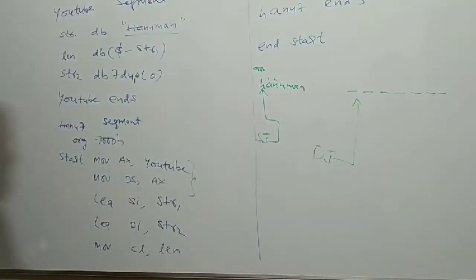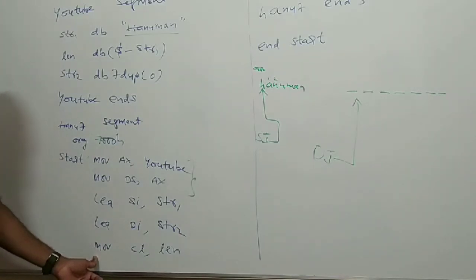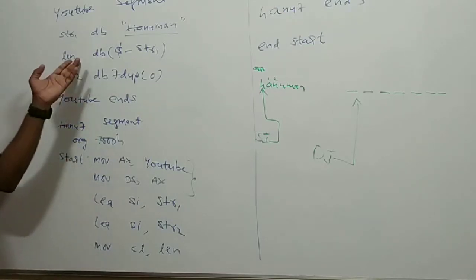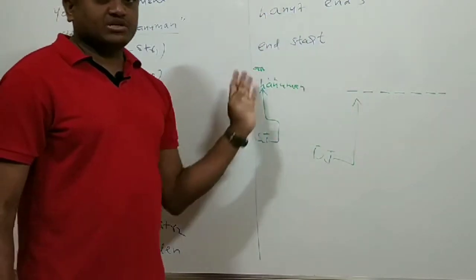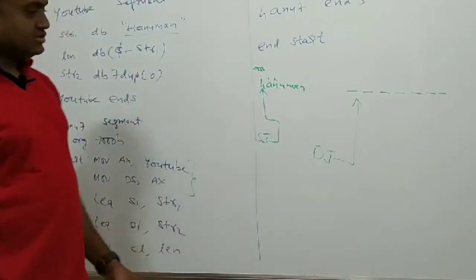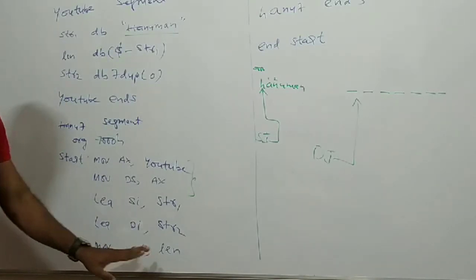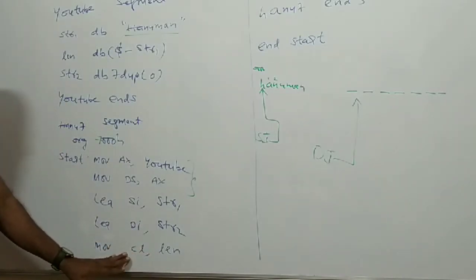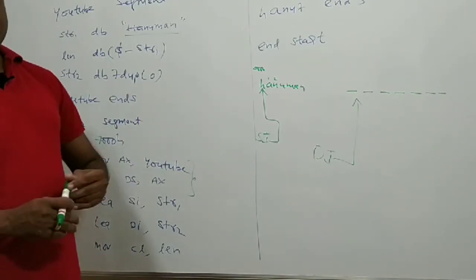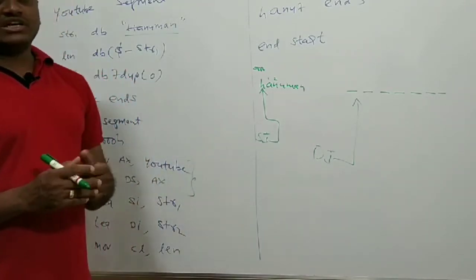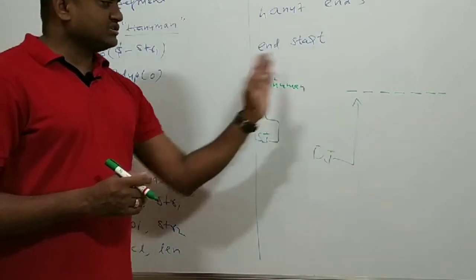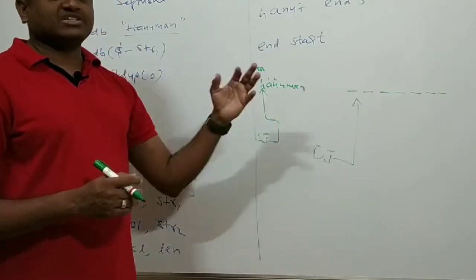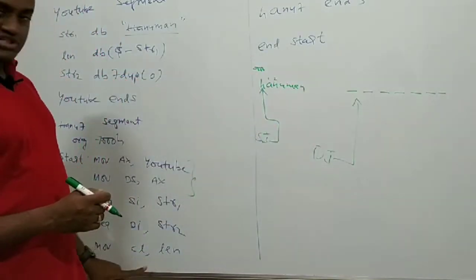After that, the very important step is MOV CL, length. Why we have calculated the length? Because I have to move this string from one place to another place, and how many number of times I have to move will be decided by the length of the string. So I copy that value into CL. CL is called the counter register of 8086. Whatever value you put in CL, that many number of times the repetitions will happen. So here we are going to move the string — how many number of times will be decided by the value in CL. That's why I kept the length of the string in CL.